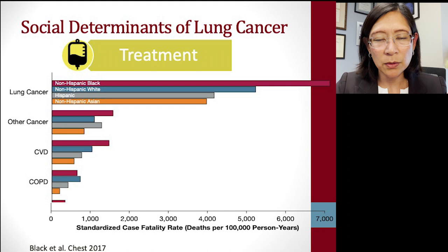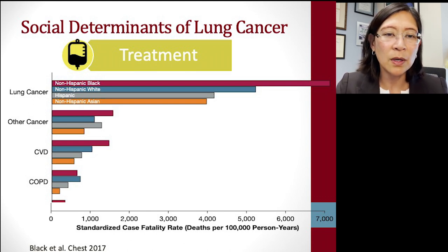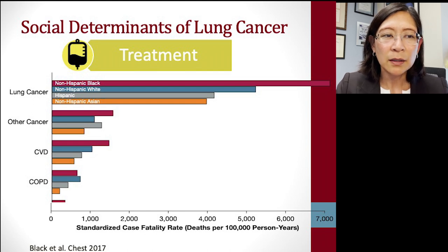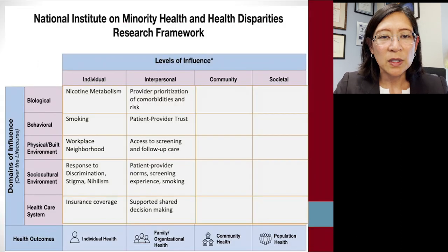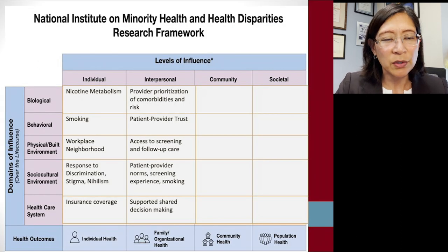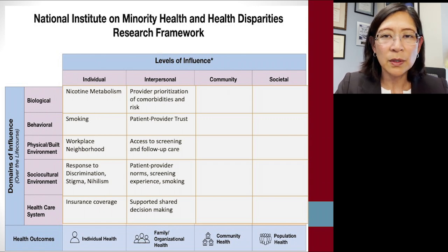As we look at addressing healthcare disparities in lung cancer care, I think it's best to rely on a research framework proposed by the National Institute on Minority Health and Health Disparities. They've created a framework that divides health disparities into levels of influence: individual, interpersonal, community, and societal. At each of these levels, there are domains of influence.